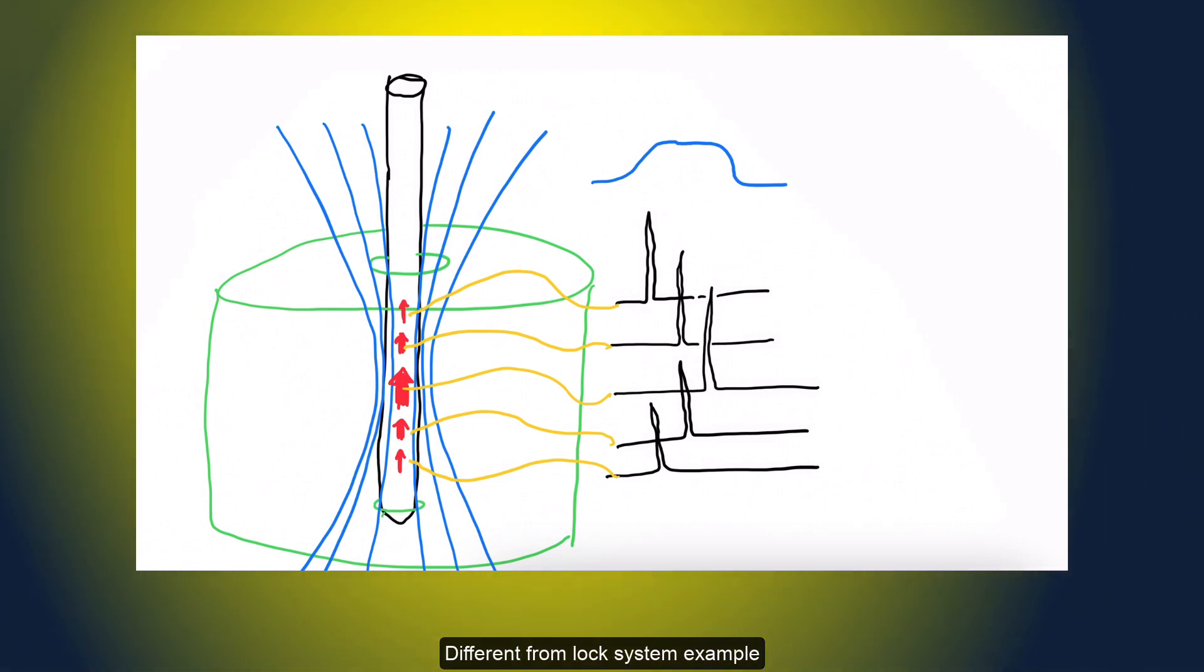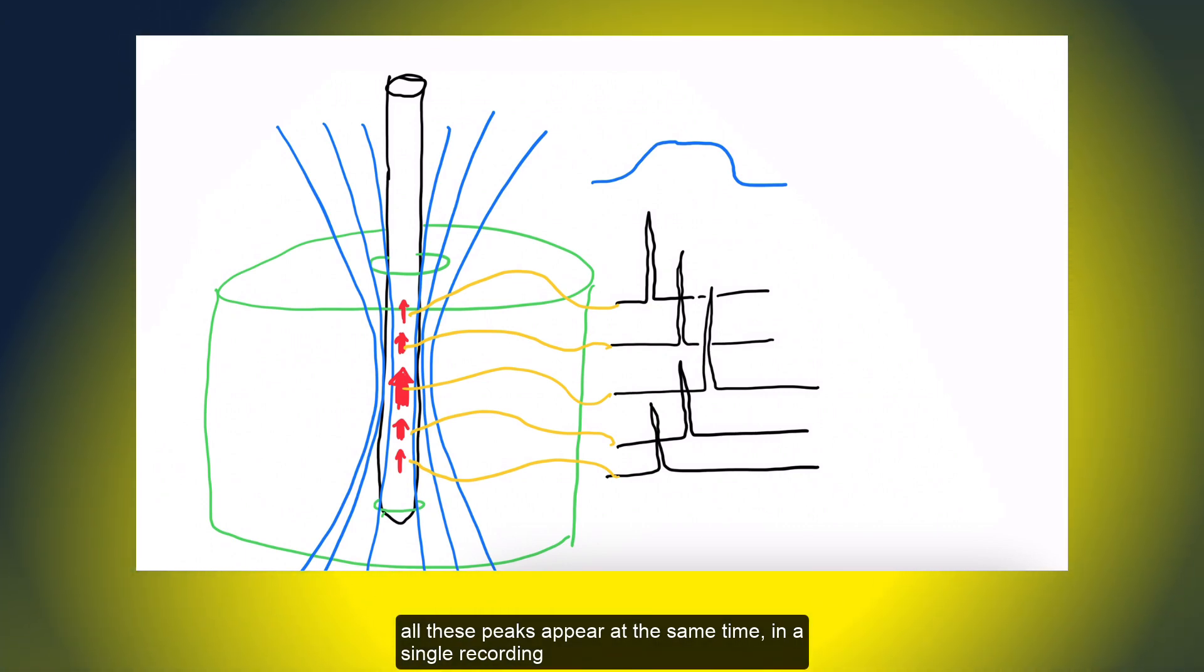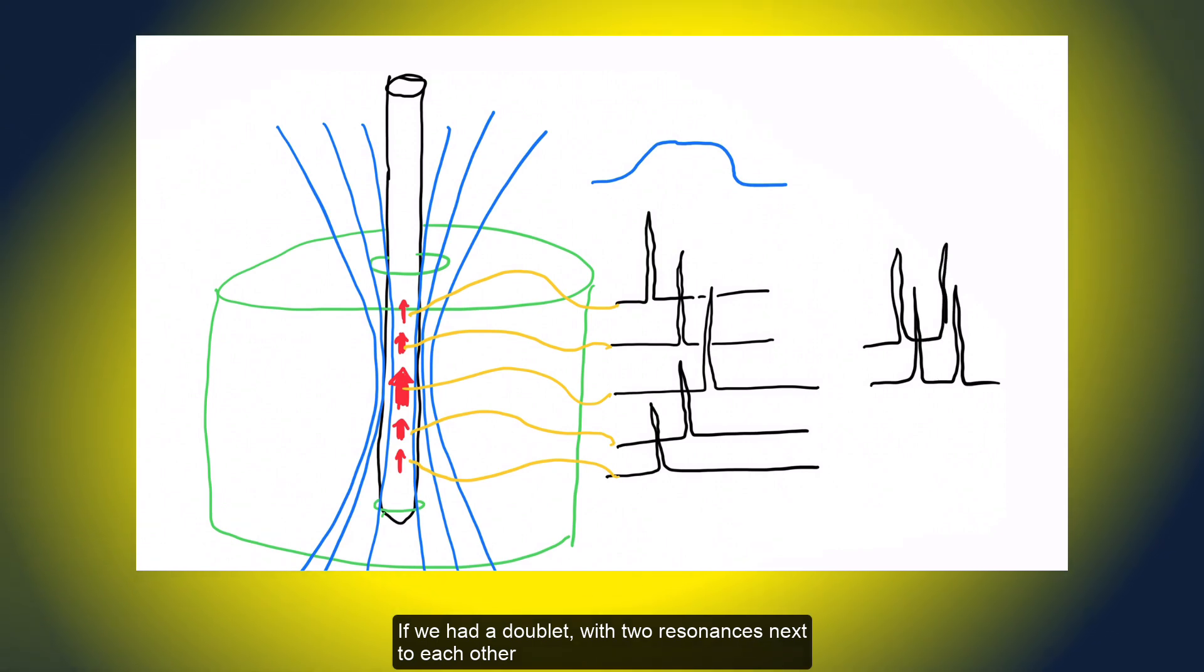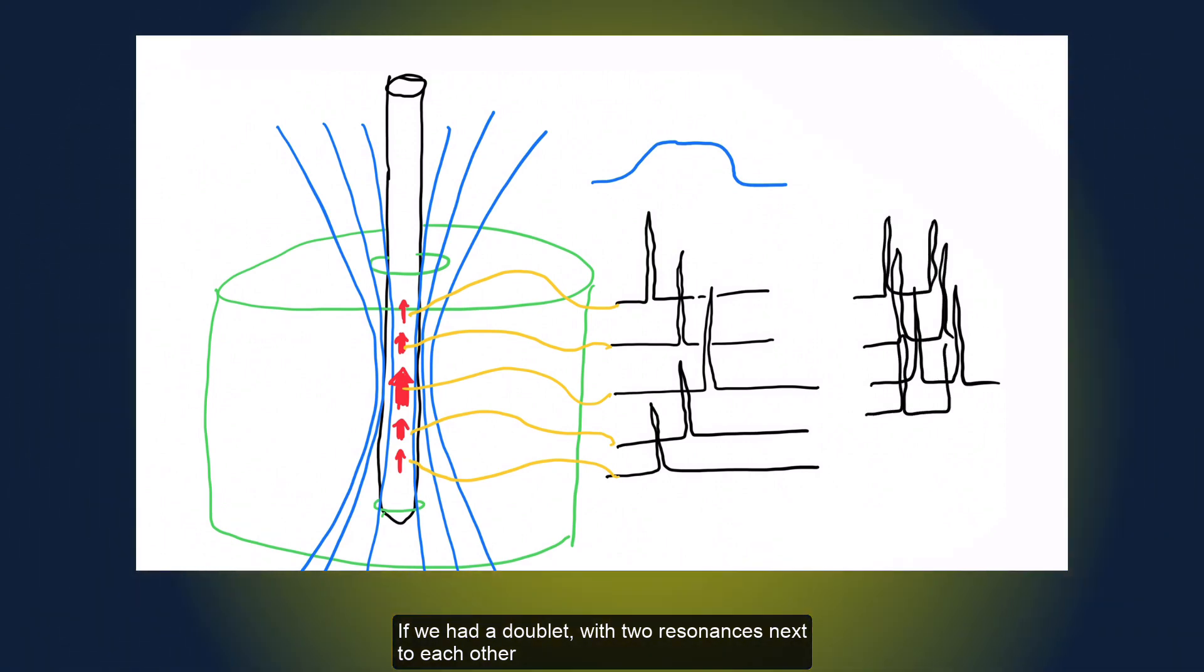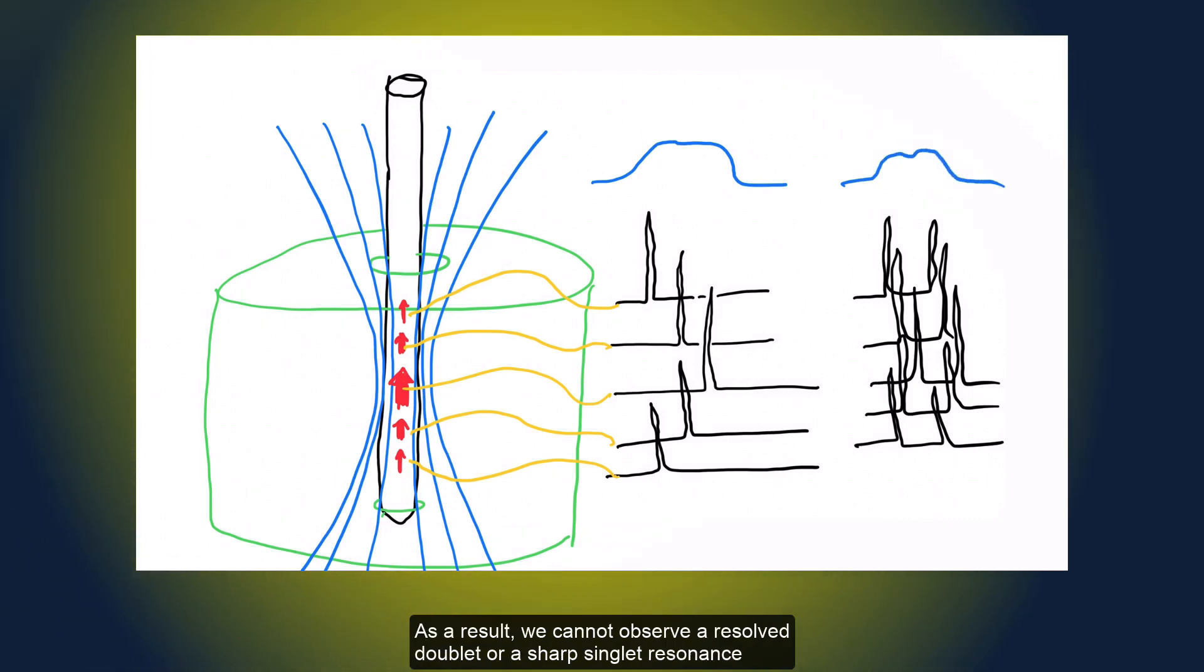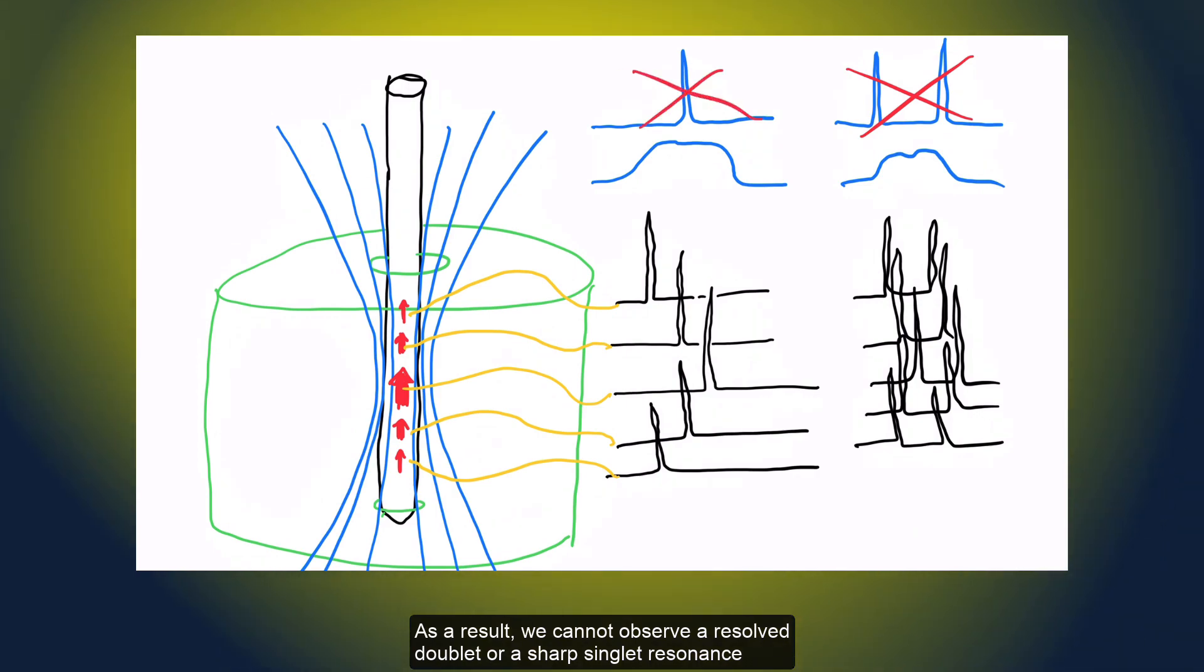Different from the lock system example, all these peaks appear at the same time in a single recording. If we had a doublet with two resonances next to each other, such divergence of magnetic field would lead to poor resolution. As a result, we cannot observe a resolved doublet or a sharp singlet resonance.